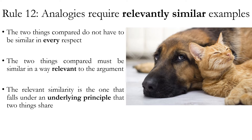In the cats and dogs example, the fact that both are mammals is not relevant to whether they both meow. There are some things shared by all mammals, but calls or verbal communication is not one of them. However, if you use the fact that they're both mammals to argue that because dogs gestate in the wombs of their mothers, therefore cats do as well — that would be a relevant similarity, because it invokes the underlying principle of them both being mammals.